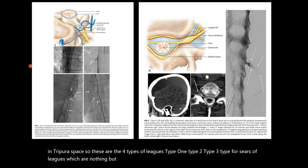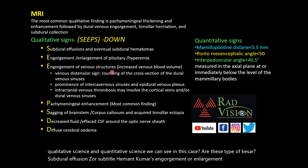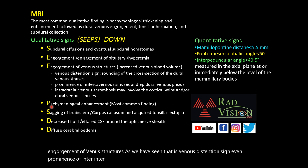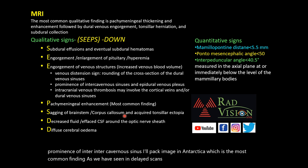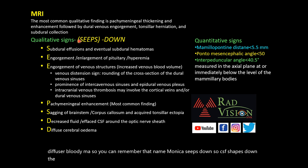The qualitative signs we can see in these cases are subdural effusions or subdural hematomas, engorgement or enlargement of the pituitary, engorgement of venous structures (venous distension sign), prominence of the intercavernous sinus, pachymeningeal enhancement or thickening, sagging of the brainstem and corpus callosum, tonsillar ectopia or descent, decreased fluid or effaced CSF around the optic nerve sheath, and diffuse brain edema. You can remember these with the mnemonic SEEPS DOWN — CSF seeps down, the tonsil seeps downwards.